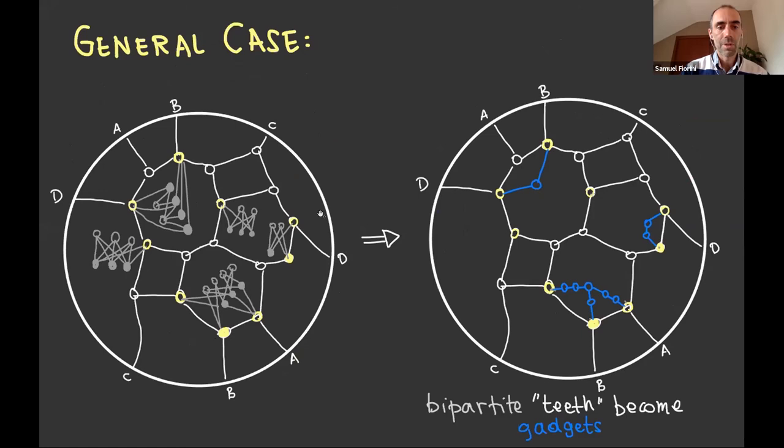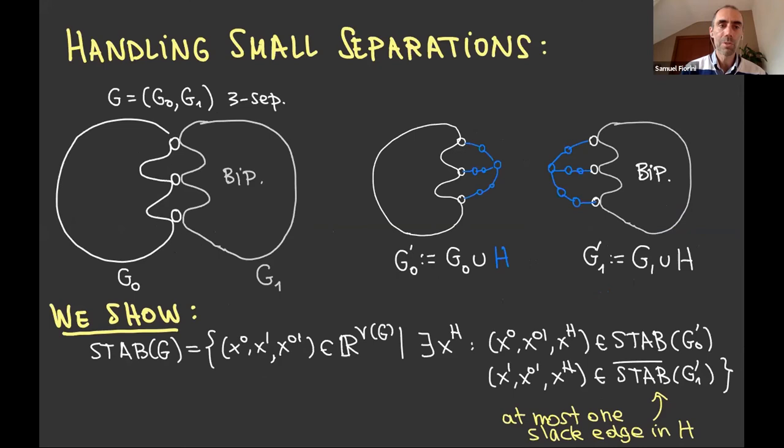Now for the general case, you will have projective planar graph actually, four connected projective planar graphs that has some bipartite graphs attached to it. And the first thing we will do is to replace all these bipartite graphs that can actually be arbitrarily big and you actually can have arbitrarily many of them. You, we can replace them with gadgets. So those that attach with one vertex, actually you can forget about them. So it's only the two separations or the three separations that have to be dealt with.